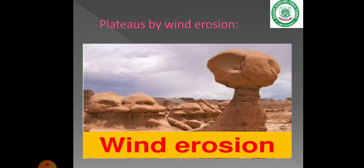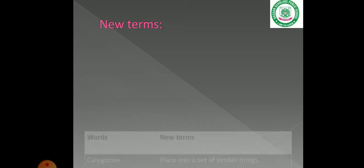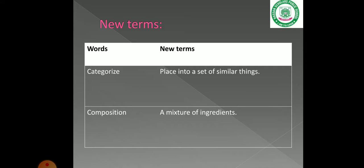Now let's understand the vocabulary word 'categorize.' To categorize means to place things into a set of similar groups. For example, with plateaus, if we look at similar features and group them together — inter-mountain, piedmont, volcanic — we call that categorization.